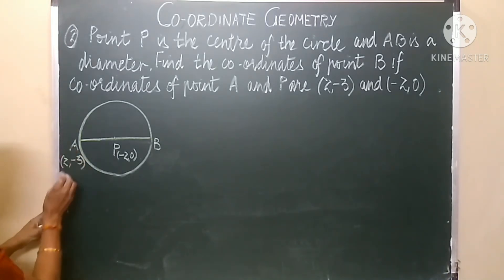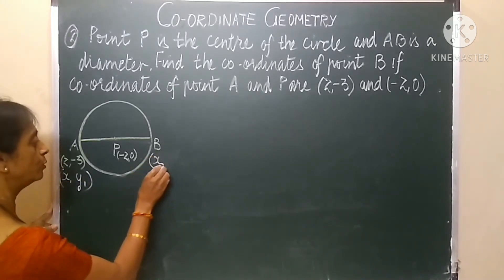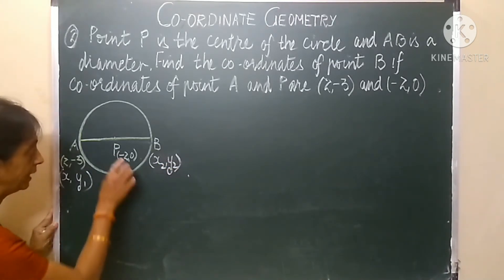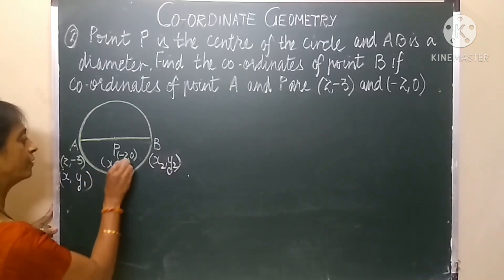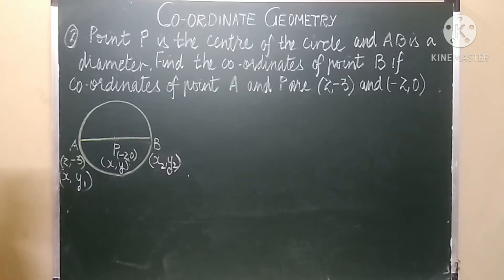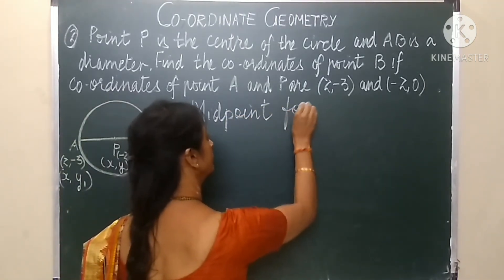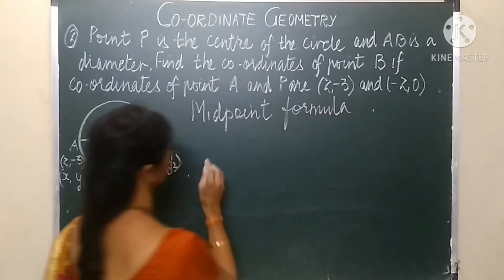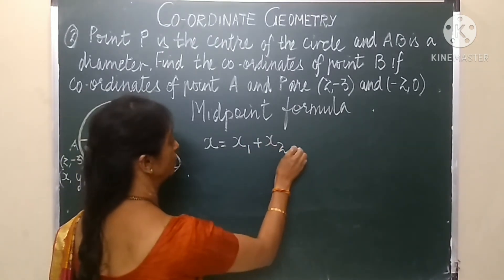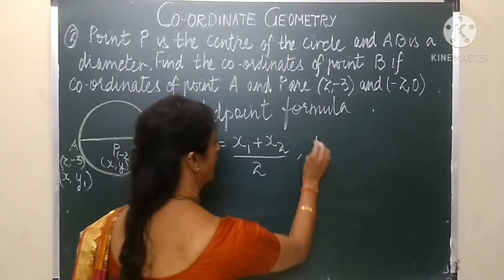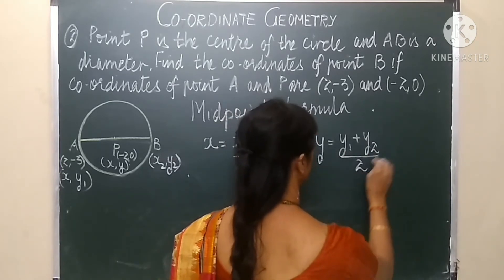We have to calculate the coordinates of the other point B, which also forms the diameter. We will use the midpoint formula because P is the midpoint — as P is the center, P is the midpoint of diameter AB for this particular circle. Let's assign values: A is represented by x1, y1; B, which is unknown, can be represented by x2, y2; and P, which forms the midpoint as it is the center, can be assigned the value x, y. The midpoint formula is: x = (x1 + x2) / 2, and y = (y1 + y2) / 2.